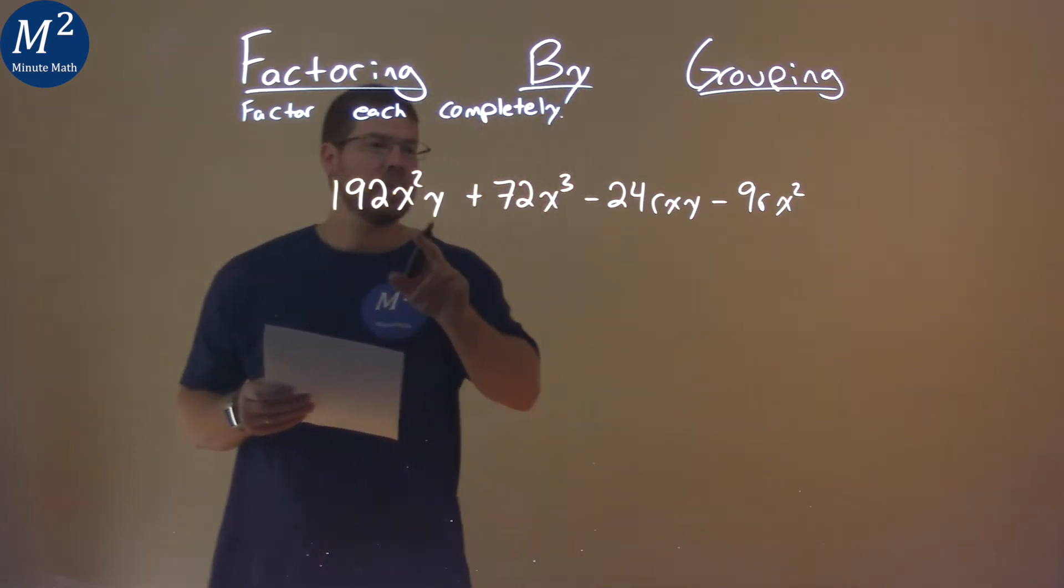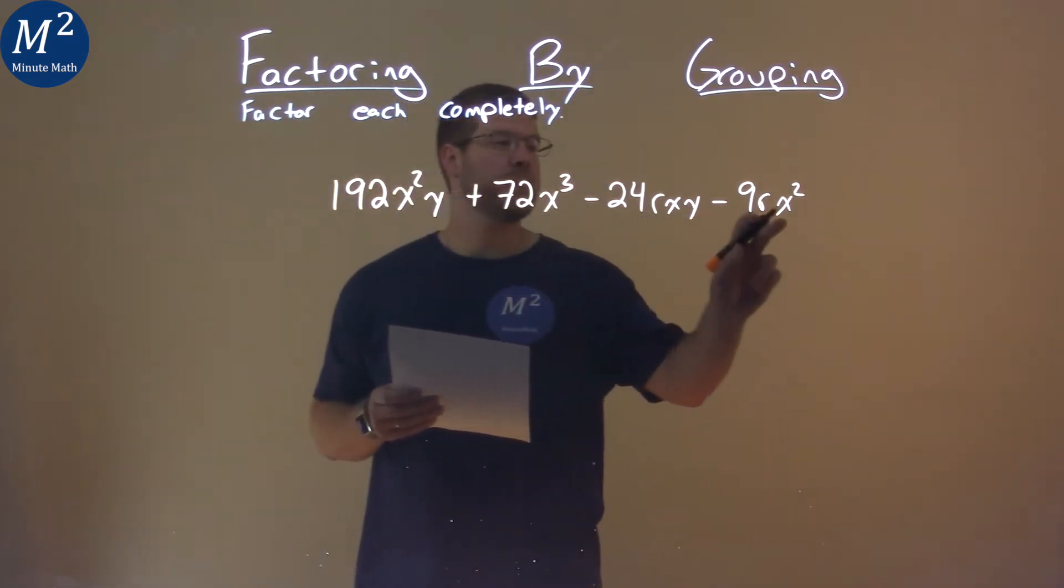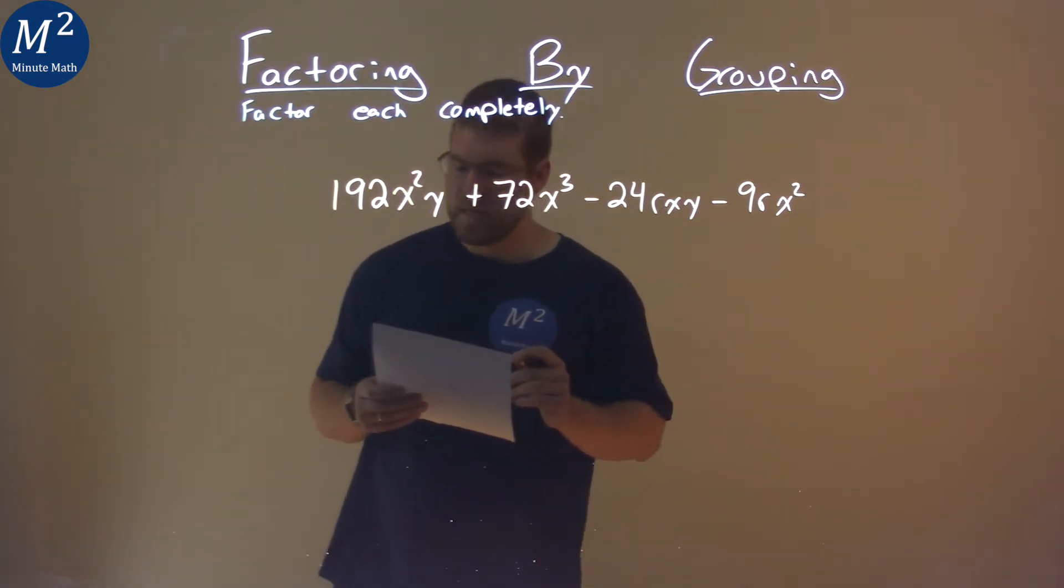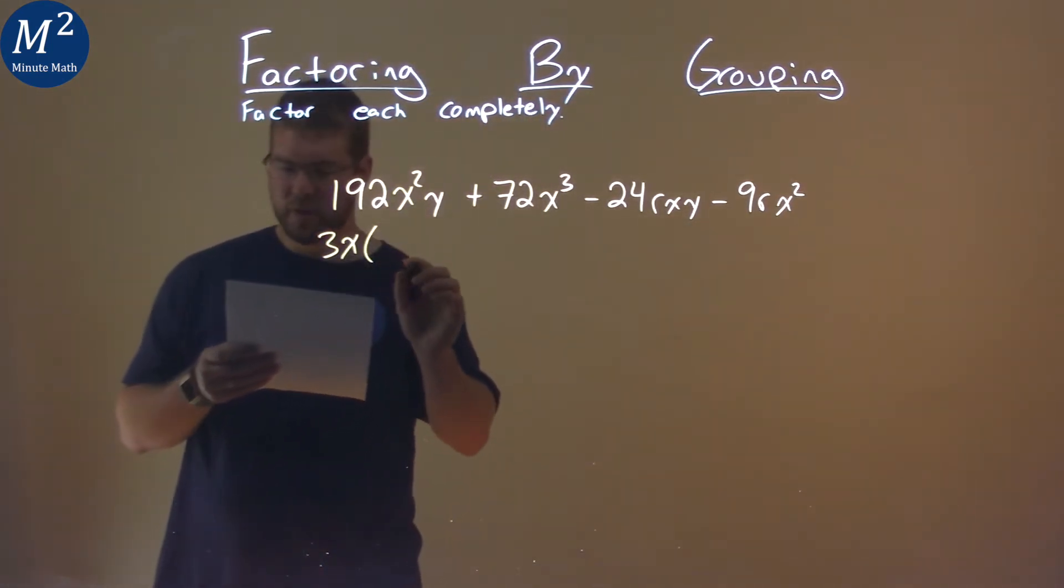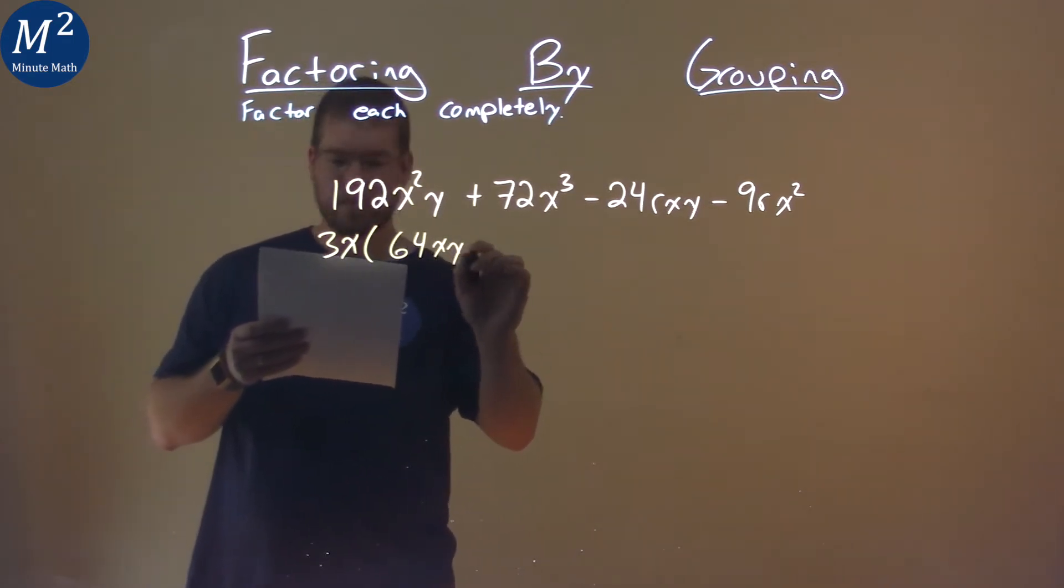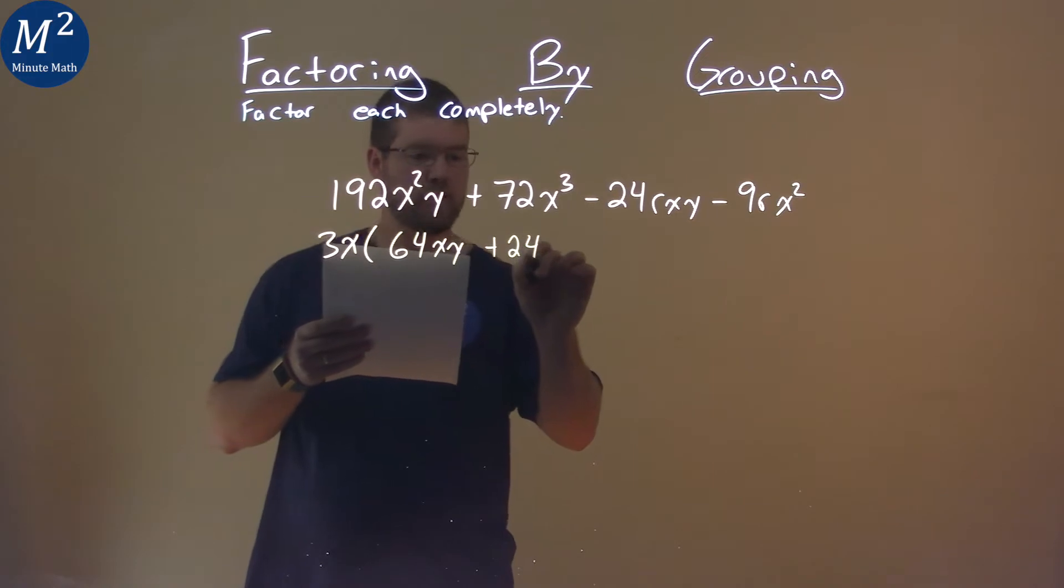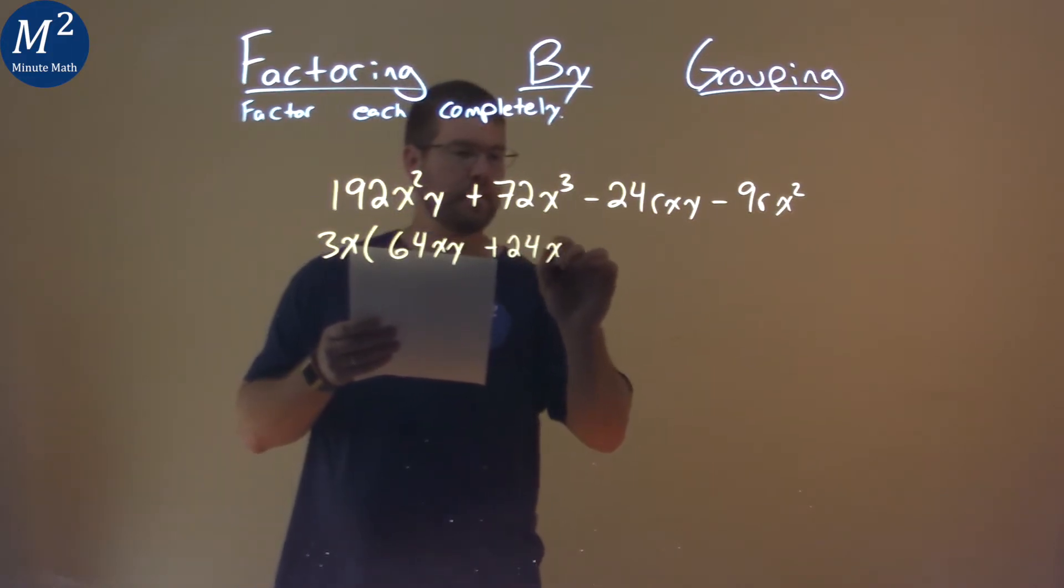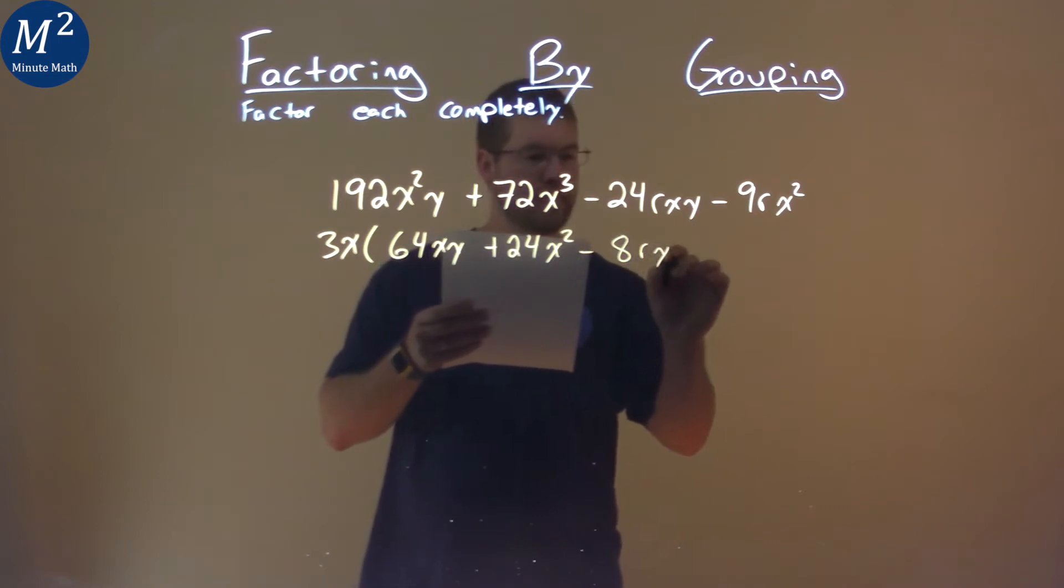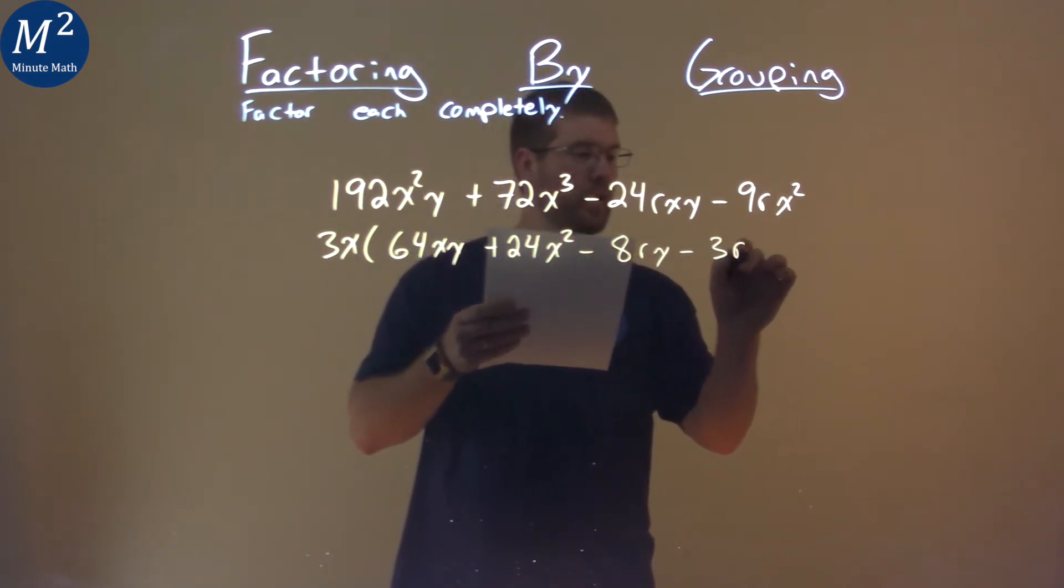I notice an x is in each part here, as well as 3 goes in each number. So I'm going to pull out a 3x here, and what I'm left with is 64xy + 24x² - 8ry - 3rx.